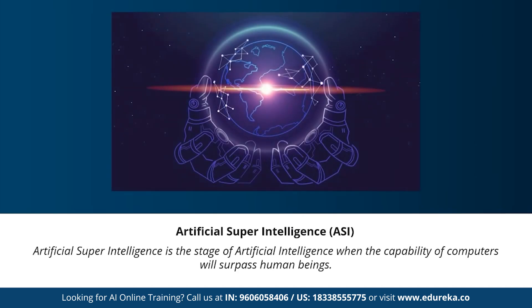Moving on to our last stage: artificial super intelligence. This is the stage of AI when the capability of computers will surpass human beings. It is currently seen as a hypothetical situation, as depicted in movies and science fiction books where machines are taking over the world. I believe machines are not very far from reaching this stage given our current pace, but such systems don't currently exist. Artificial super intelligence refers basically to any system that is much smarter than humans.